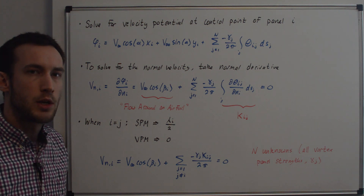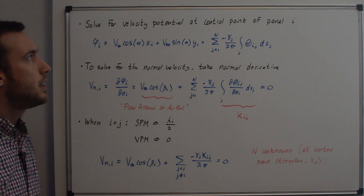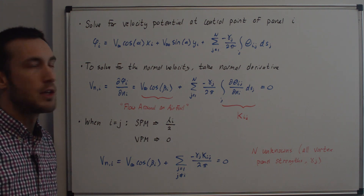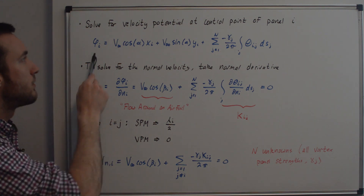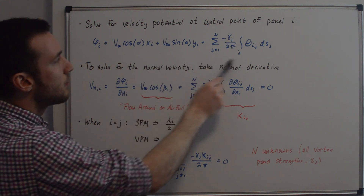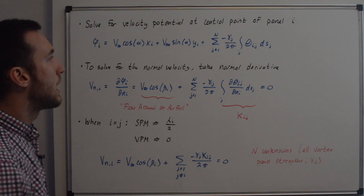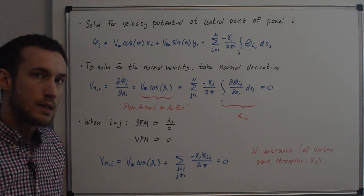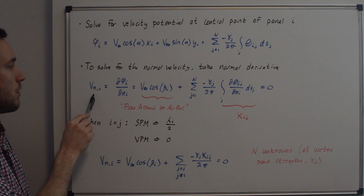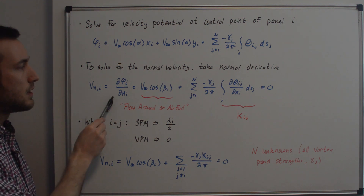On the previous whiteboard we had the expression for the velocity potential at an arbitrary point p. Here we find the velocity potential induced at the control point of panel i — so we have phi_i, the same uniform flow term, and a similar vortex panel term except the theta_pj is now theta_ij. To solve for the normal velocity on the i-th panel, we just take the normal derivative, giving us d phi_i d n_i.